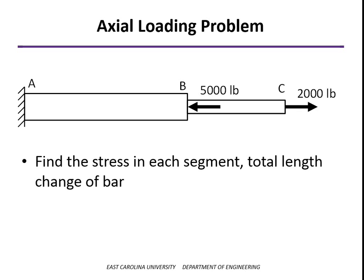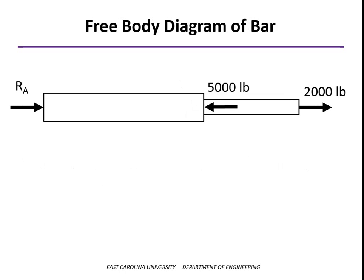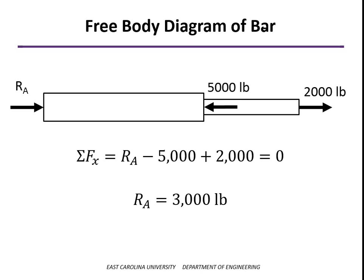To start out with, if I wanted to cut this bar in AB and look at everything to the left, I would need to include the reaction force on the right. So just start with the statics problem and find the external forces — the applied forces of 5,000 and 2,000 pounds — and the reaction force R of A. By doing the sum of the forces, we see that R of A has to be 3,000 pounds to balance out the net 3,000 pounds to the left.